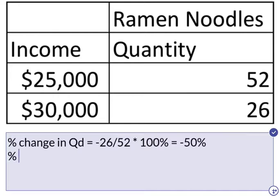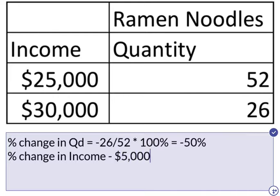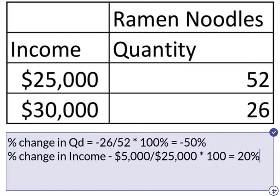Now we need to know what is the percent change in income. That's simply the change in income, which is $5,000, divided by the original income, which was $25,000, multiplied by 100%. $5,000 over $25,000 is one-fifth, so that's 20%.